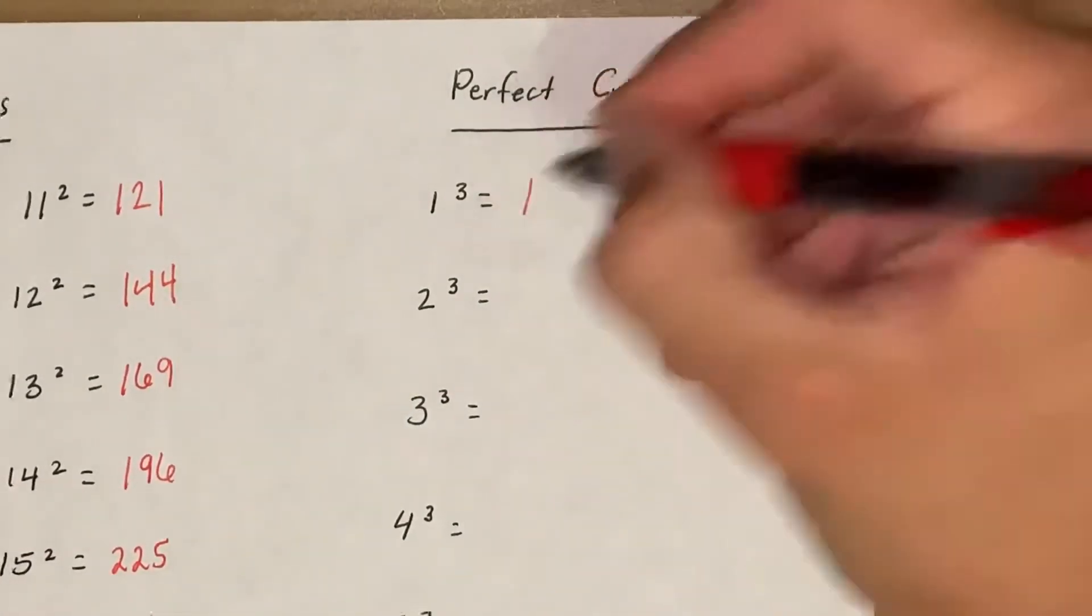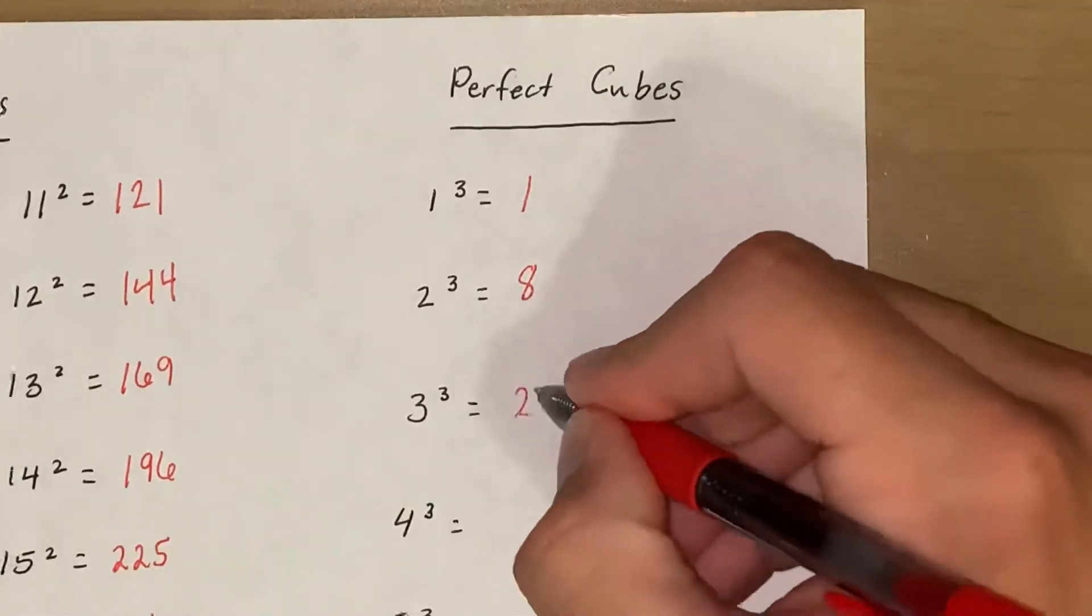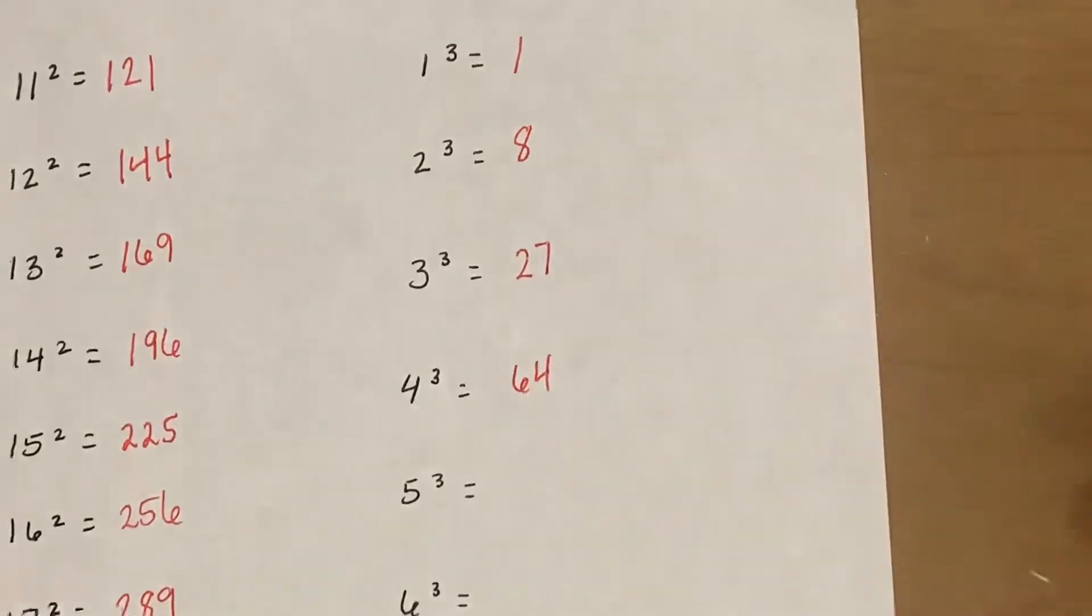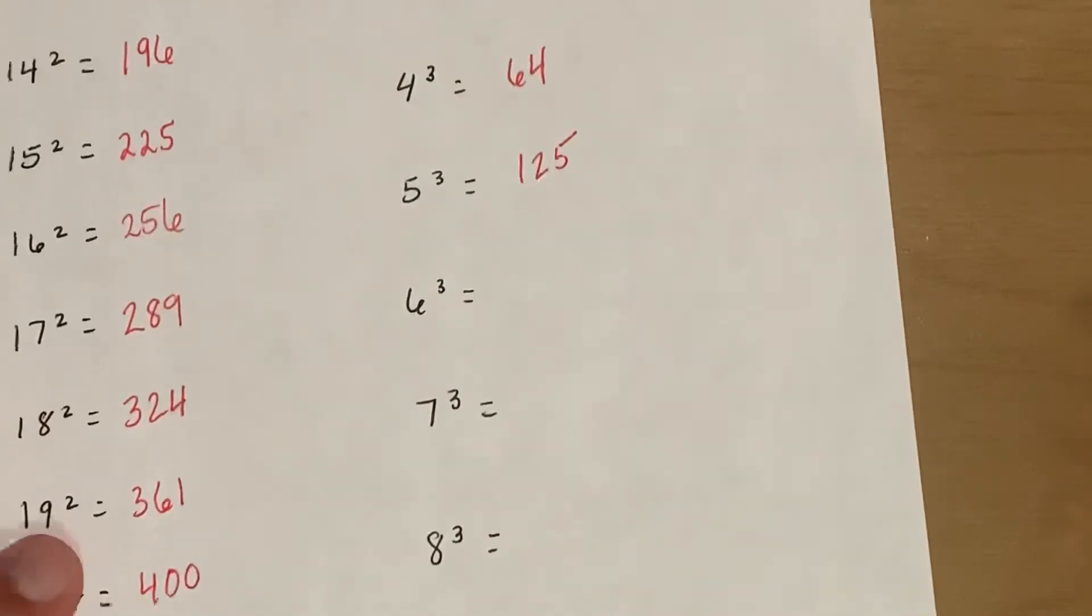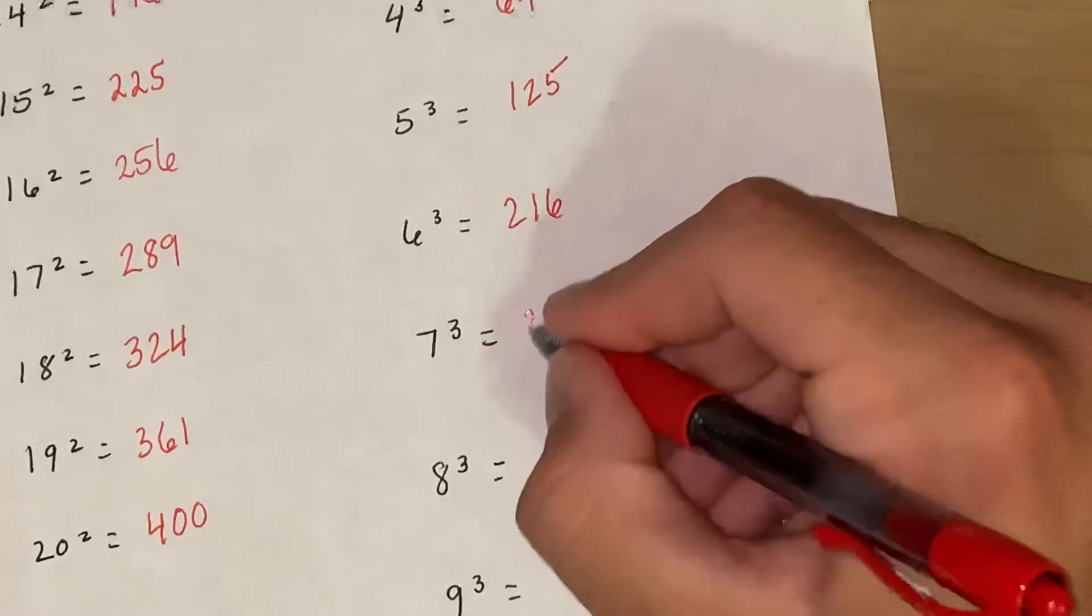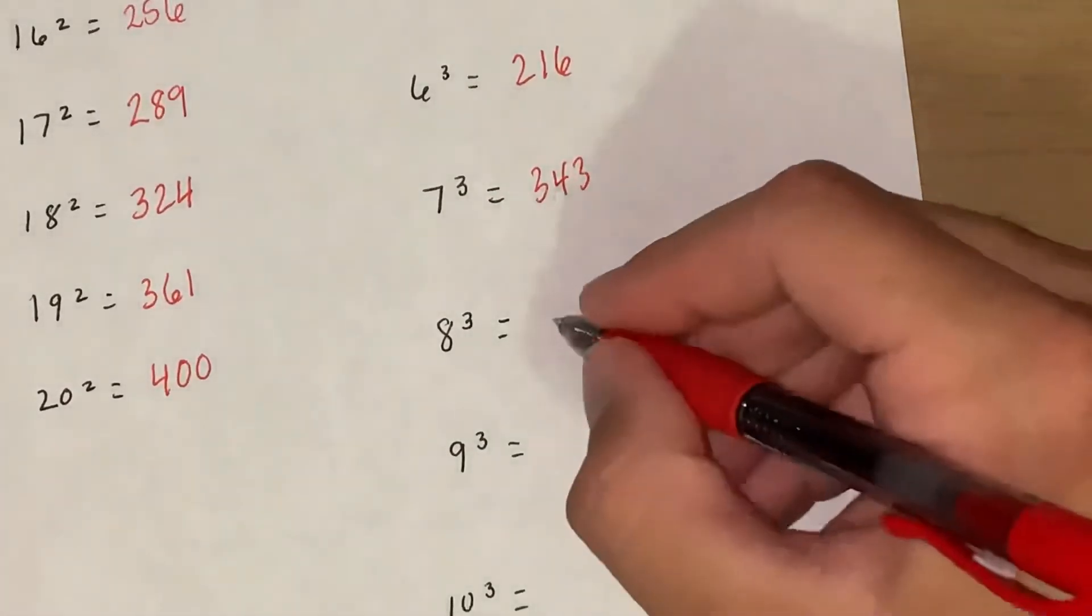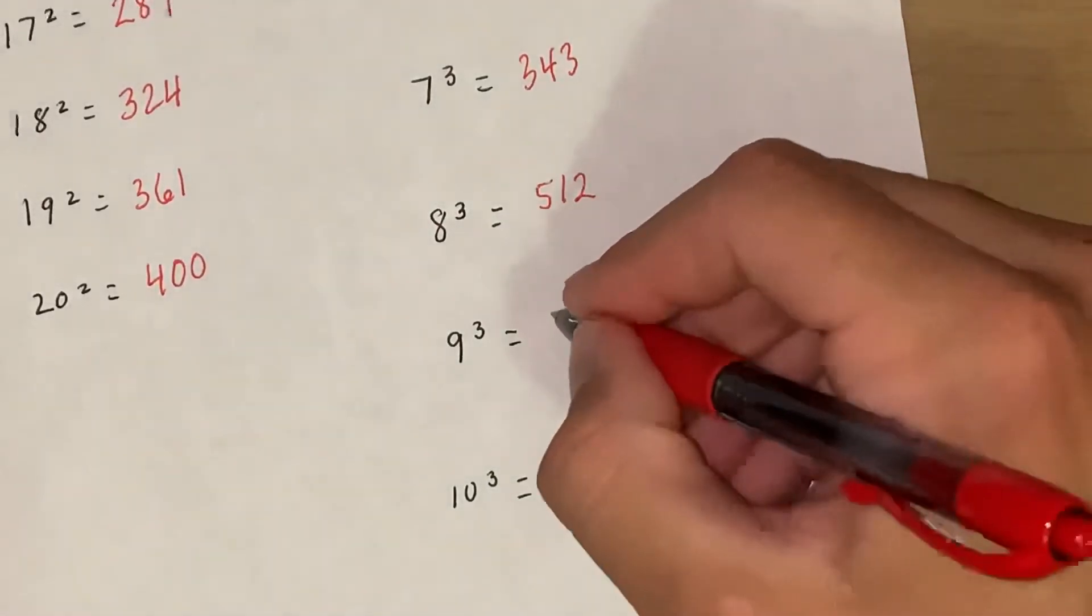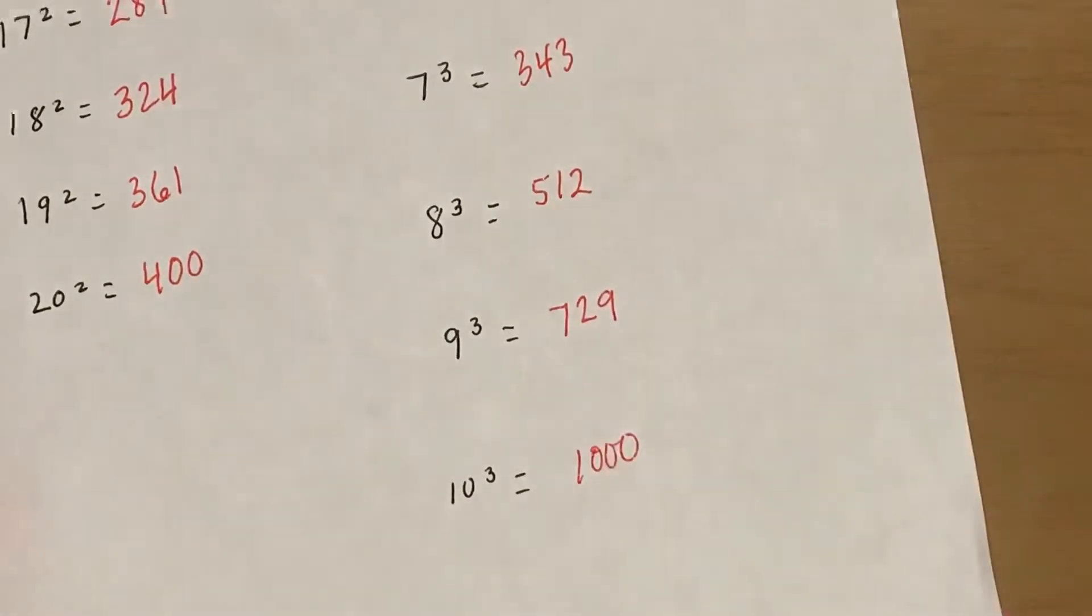Okay so obviously 1 cubed is 1. 2 cubed would be 8. 3 cubed would be 27. 4 cubed is 64. 5 cubed would be 125. 6 cubed would be 216. 7 cubed would be 343. 8 cubed would be 512. 9 cubed would be 729. And 10 cubed is 1000.